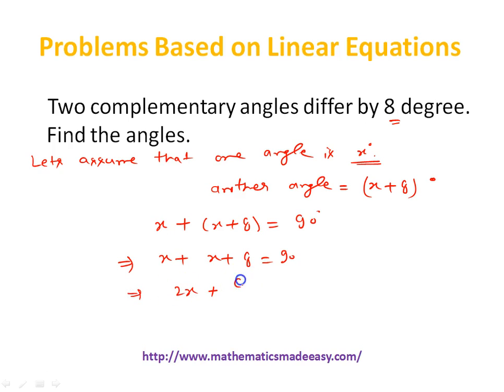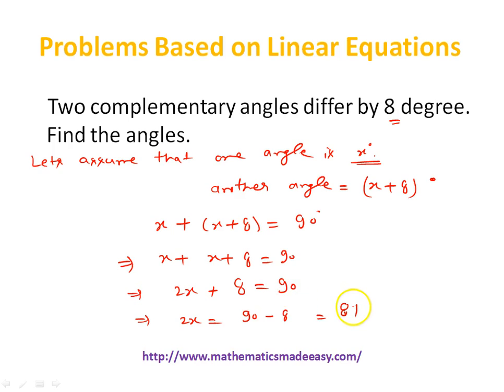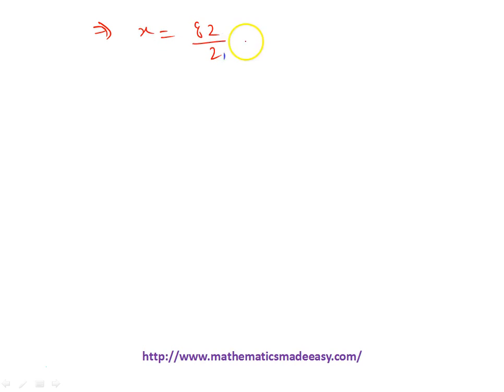Let's simplify: 2x plus 8 equals 90, so 2x equals 90 minus 8, which is 82. So x equals 82 divided by 2, which is 41 degrees. So we have got x equal to 41 degrees.